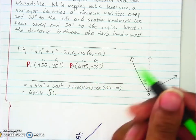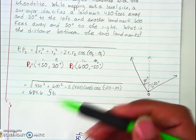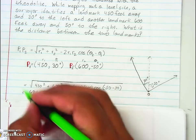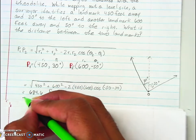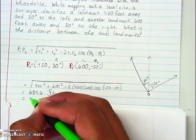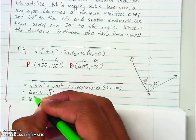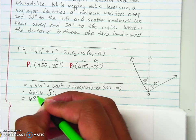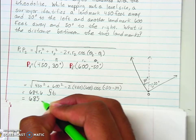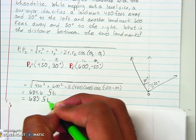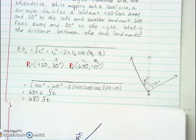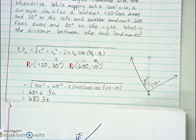The result is approximately 684.6 feet. Since the numbers given are all whole numbers, we'll round this to 685 feet. That's how far apart the two landmarks are — and that's all you have to do.